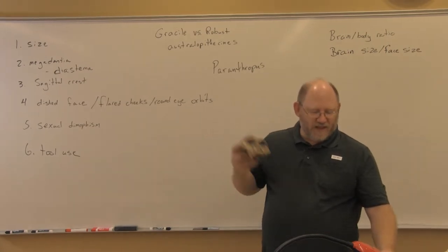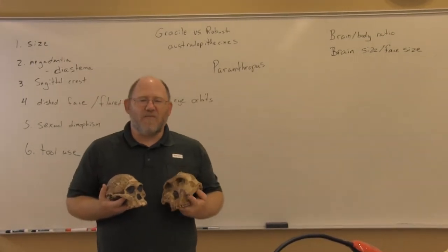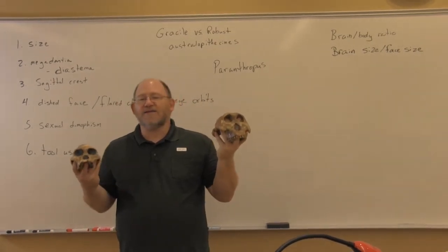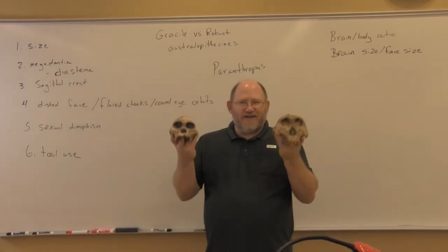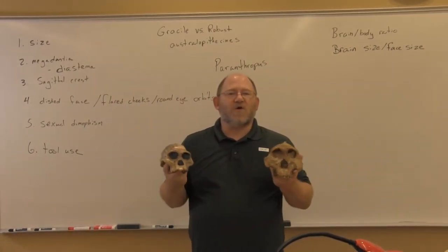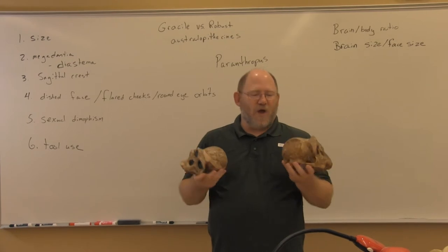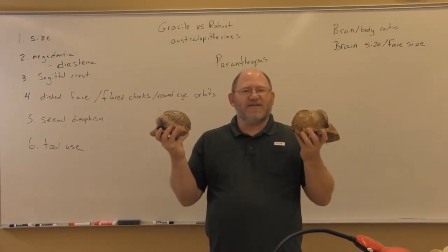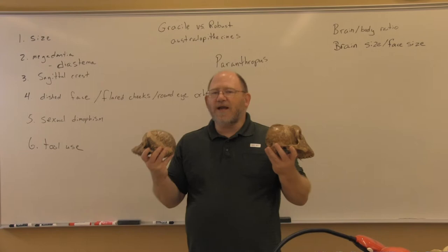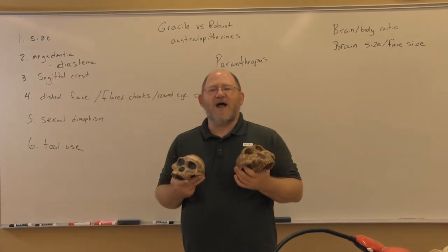The gracile form is the smaller, more thinly built, and the robust form is larger. There is an obvious difference in size. One of the main characteristics between the two is the difference in overall size. It is important to keep in mind, though, that with the difference in size, there is very little difference in brain size. The cranial capacity between these two types of hominid is not that much different.